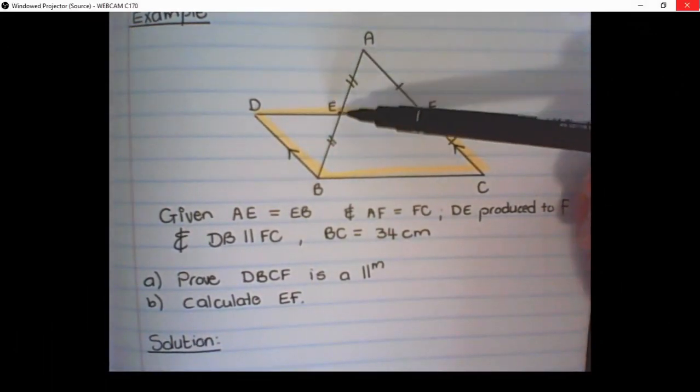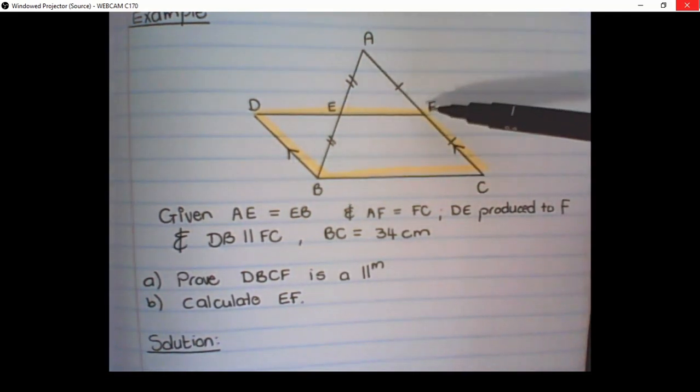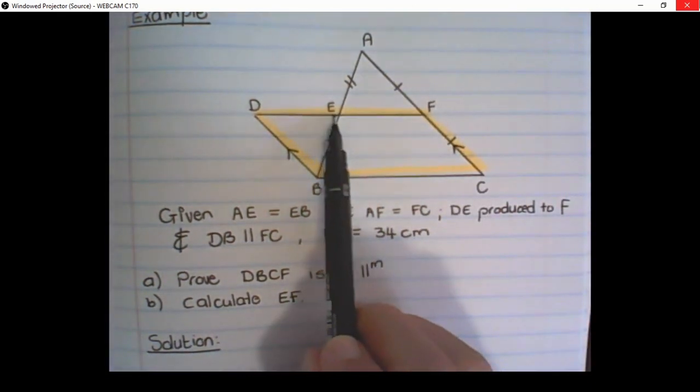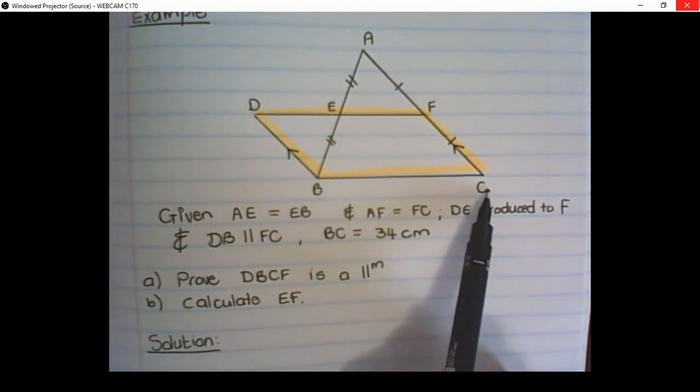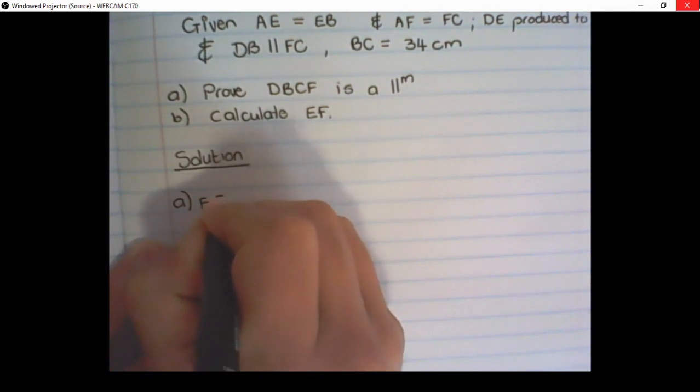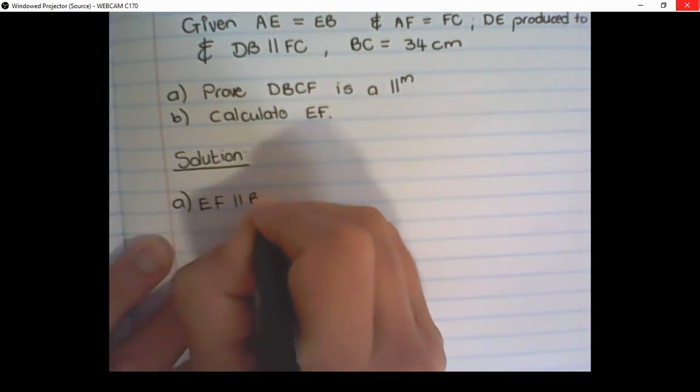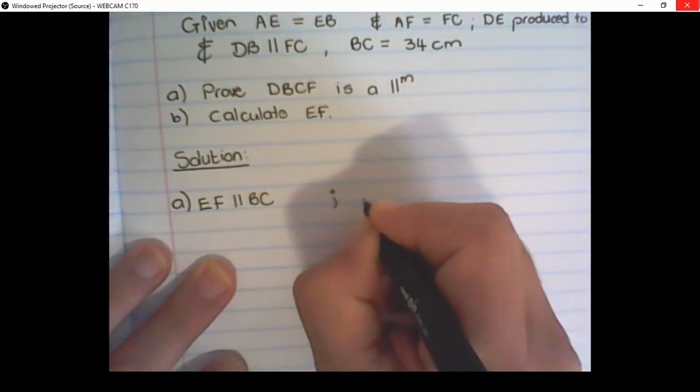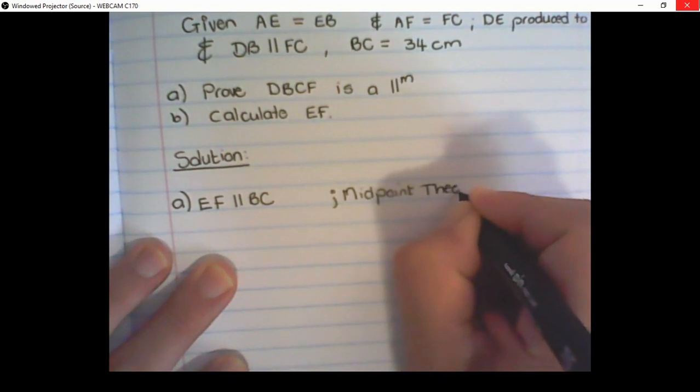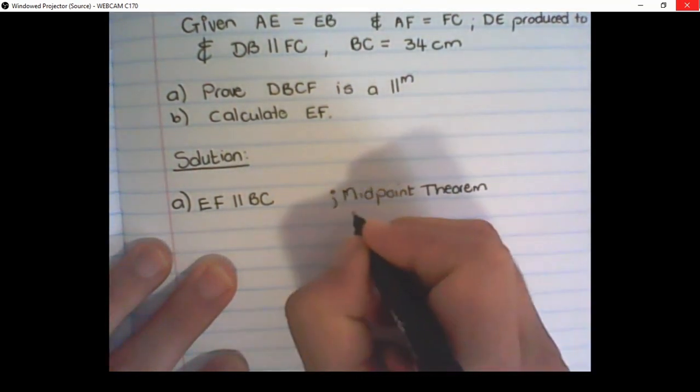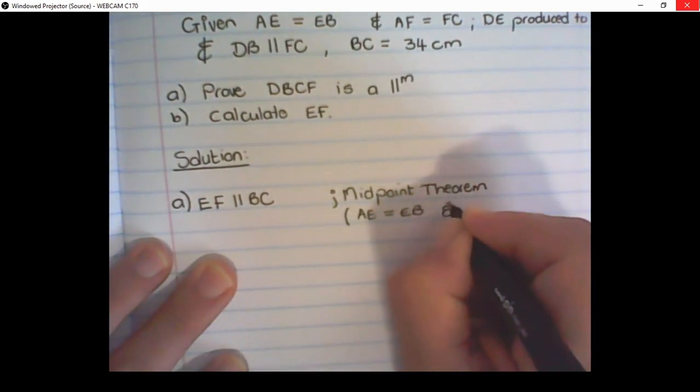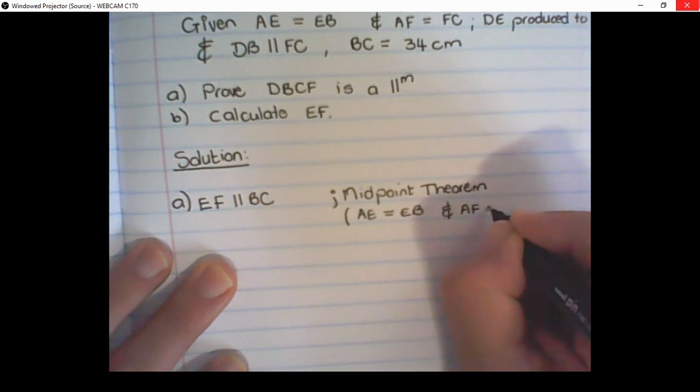Firstly, what we can see is AE is equal to EB, and AF is equal to FC. Because these two sides are bisected, it means that EF is parallel to BC by the midpoint theorem. So we can write down EF is parallel to BC, and the reason we are using is the midpoint theorem. You can use the midpoint theorem because AE is equal to EB, and AF is equal to FC.